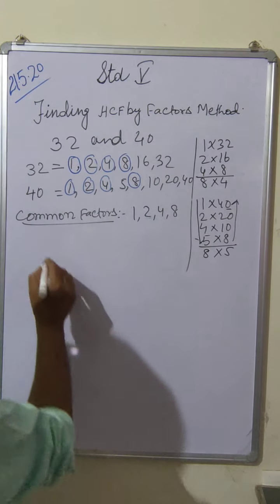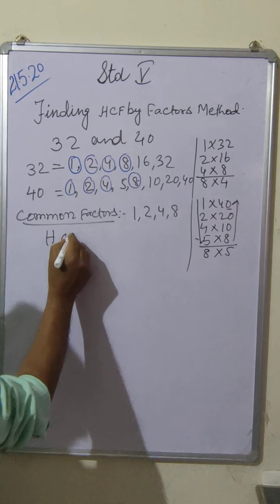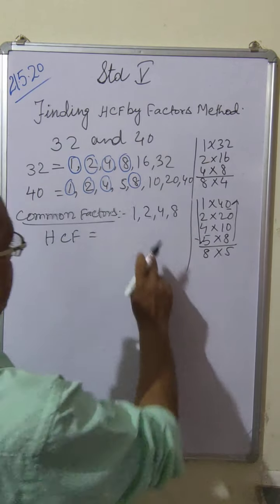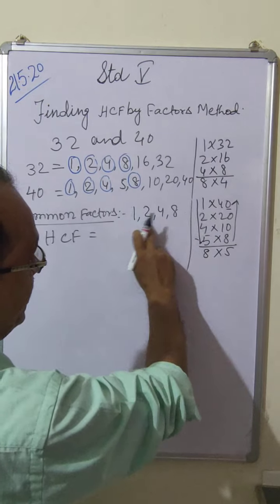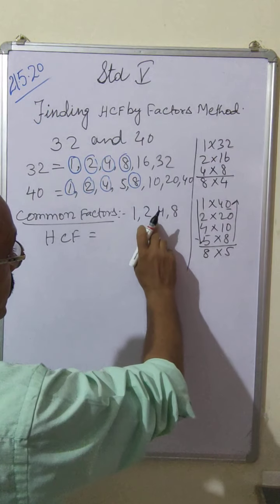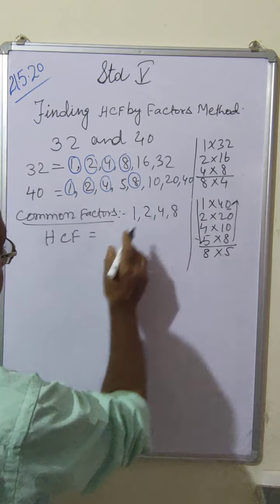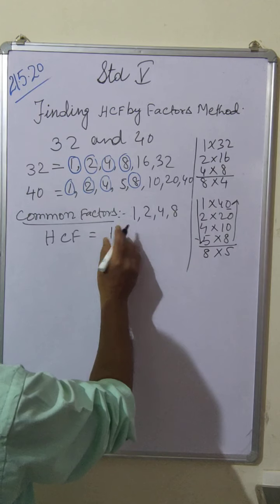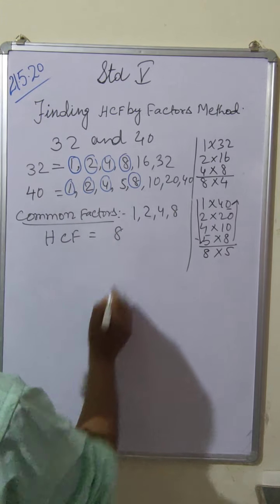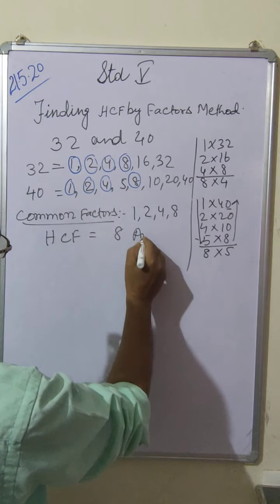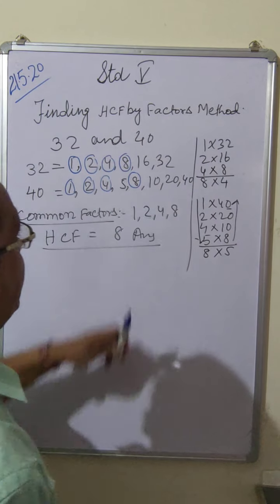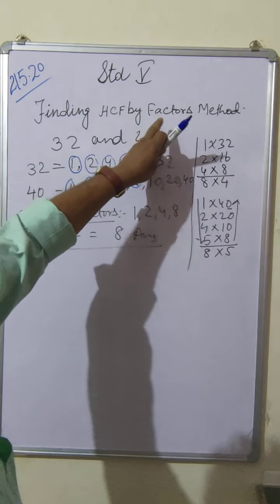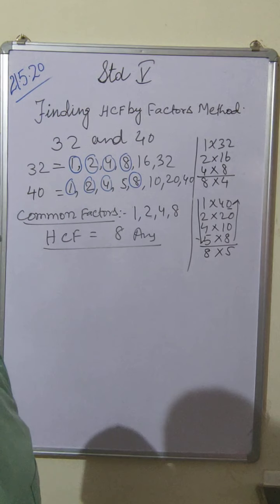Now children, here HCF, you have to see properly which one is highest. So I think 8 is highest. So HCF is 8. This is your answer children. By this method you can find HCF by factors method.